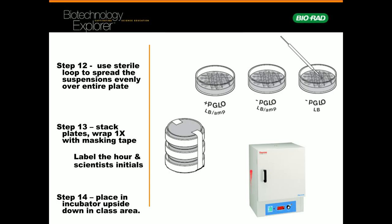Once you do that, you're going to use your loop to spread the bacteria all over the top and surface of the plate. Between each spreading, be sure that you flame the loop and sterilize it so we're not transferring materials from one plate to another. Once those are completely spread out in step 12, stack the plates up and tape them together with masking tape. Label with the hour and your scientist initials. Place them in the incubator against the wall by the window upside down. Look for the spot that has a label for your class hour, and they will remain there until Monday so we can look at the results.